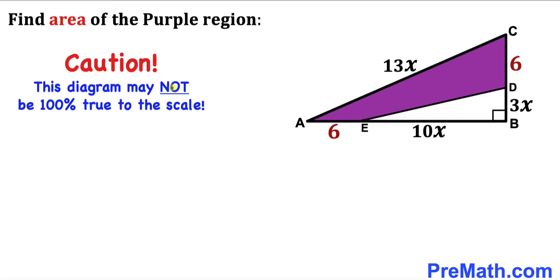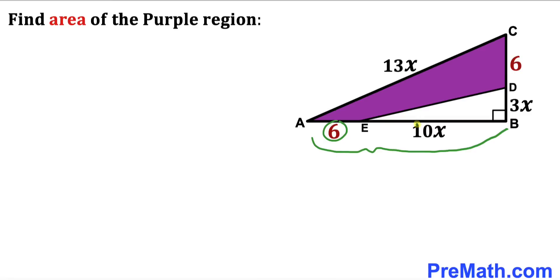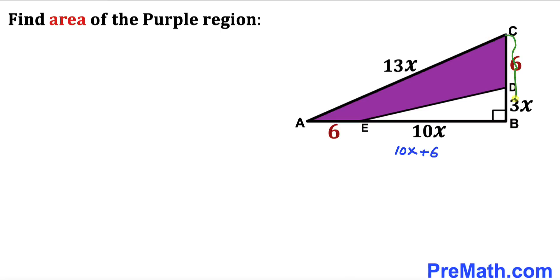Please keep in mind that this figure may not be 100% true to scale. Let's get started. Since we are interested in calculating the area of the purple shaded region, we must find the value of x first. The whole length AB is going to be 6 plus 10x, so 10x plus 6. Likewise, the vertical side BC is going to be 6 plus 3x, so 3x plus 6.